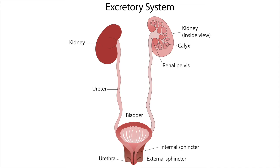This urine is carried from the kidneys to the bladder by tubes called ureters. The bladder serves as the storage unit for urine, and the urethra carries the urine from the bladder to outside the body.